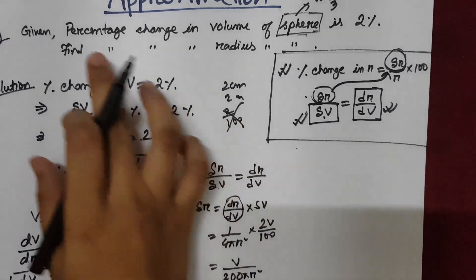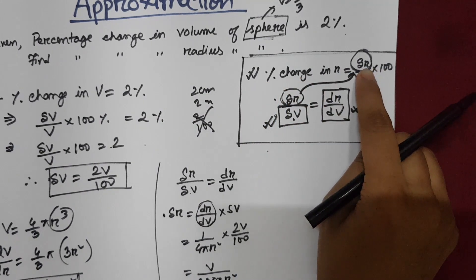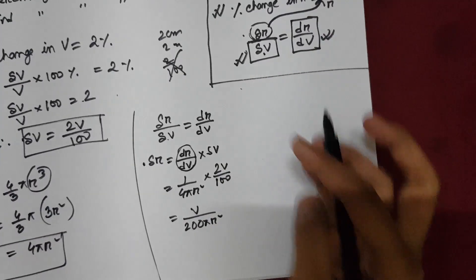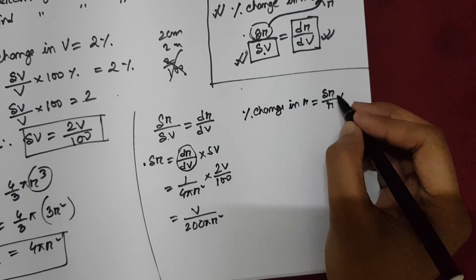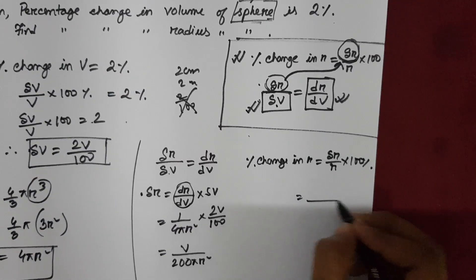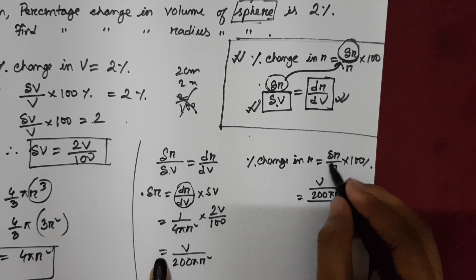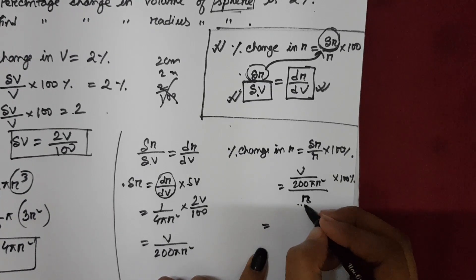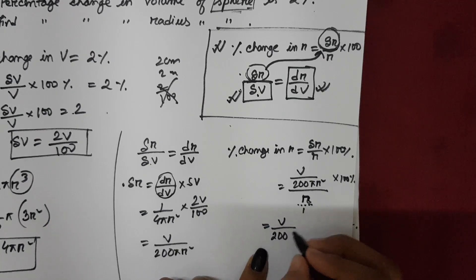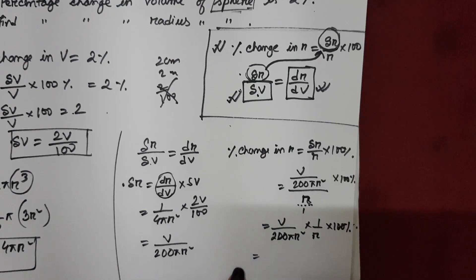Now we know the value of del r. The question asked for the percentage change in radius, which is del r by r into 100 percent. Substituting del r: percentage change in radius equals (v by 200 pi r squared) divided by r, multiplied by 100 percent. Simplifying — the two zeros cancel out — giving v by 2 pi r squared into r, which is v by 2 pi r cubed, multiplied by 100 percent.